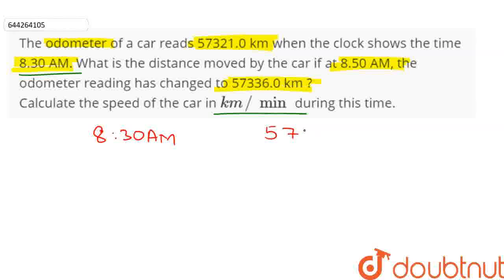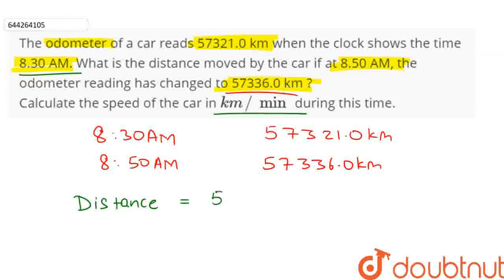The odometer reading was 57,321 km and at 8:50 AM, i.e. after 20 minutes, the odometer reading changed to 57,336 km. So the total distance travelled during this time duration is equal to the final odometer reading which is 57,336 minus the initial odometer reading which is 57,321 km.